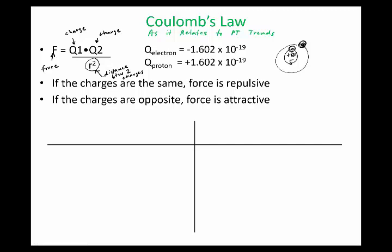How does this relate to periodic table trends? Let me modify this equation to relate to periodic table trends. IE is ionization energy, which is the energy required to remove an electron.